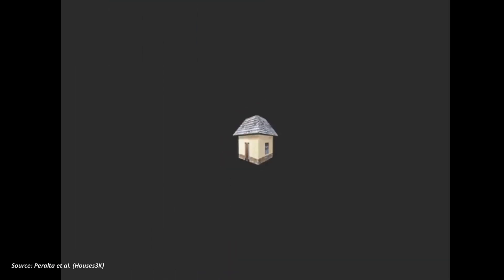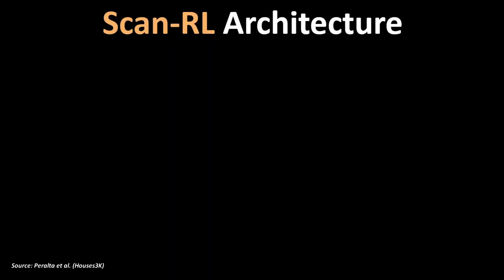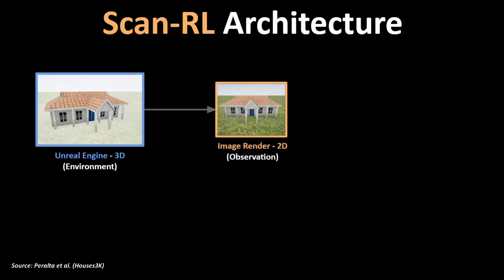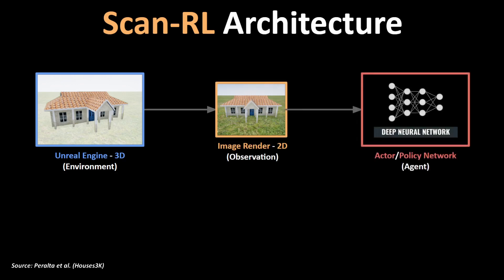In this work, synthetic data is used for training the RL agent using Unreal Engine. A 3D house designed manually is rendered as a 2D RGB image from the viewpoint of a drone. This image is fed to a deep neural network as the state observation of this environment.